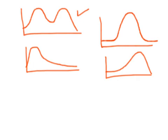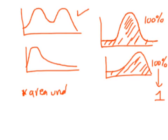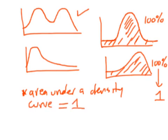What do we know about a density curve? What percentage of the observations fall under it? If you shade under the entire density curve, the answer is clearly 100%. And 100% as a decimal is 1. So one of the key facts is that the area under a density curve is always equal to 1, and that 1 basically means 100%.